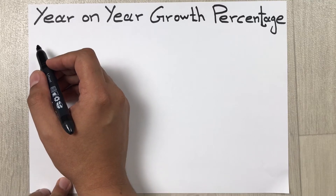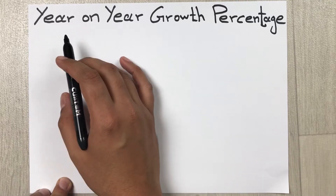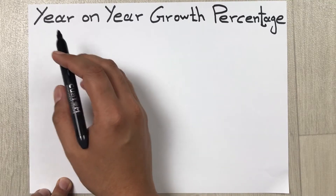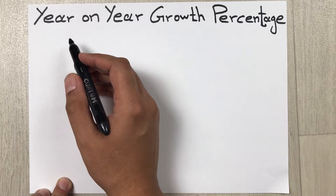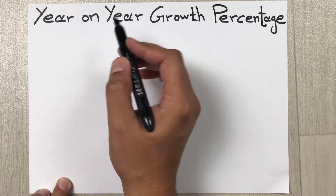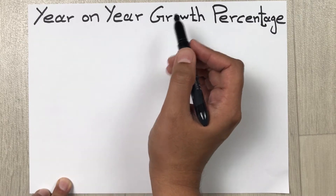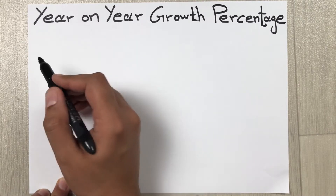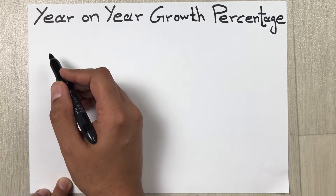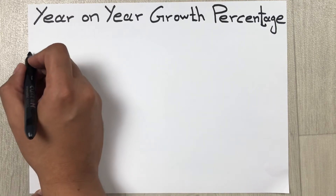Hello guys, I hope you are doing really well. In today's video, I am going to show you how to calculate year on year growth percentage. The formula to find out the year on year growth percentage is: